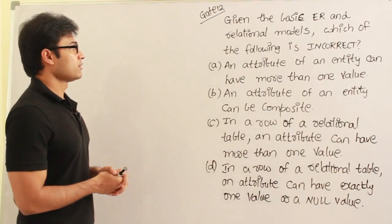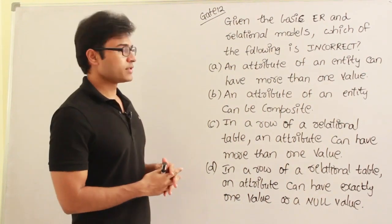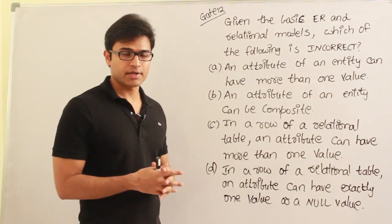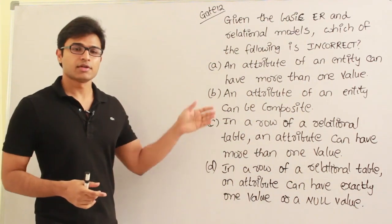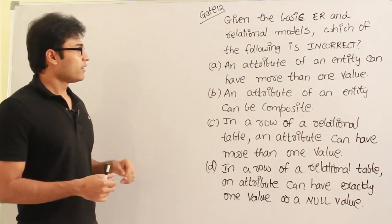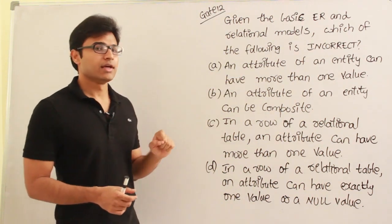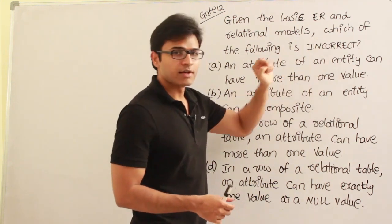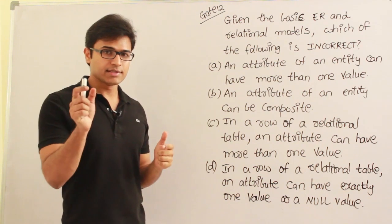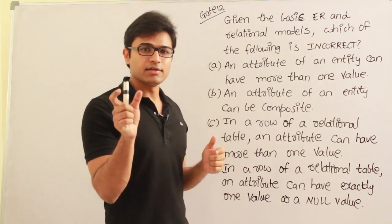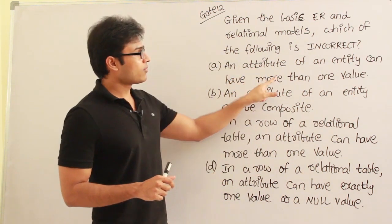This question is from GATE 2012 on the basic ER and relational models. ER means entity-relationship and relational means the tables. They are asking which of the following is incorrect — which is false. The first option says an attribute of an entity can have more than one value. Since they mention 'entity,' they are talking about the ER model.